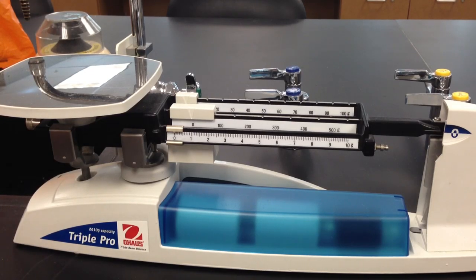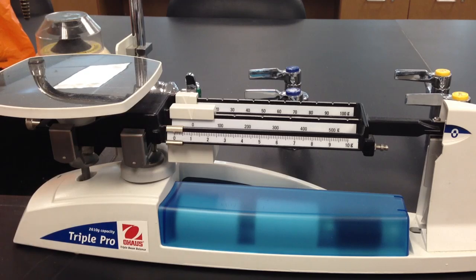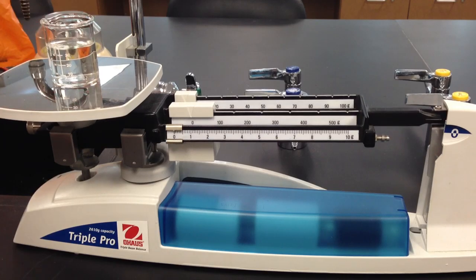How to read a triple beam balance scale. The first thing you want to do is make sure your scale is zeroed properly. We look down here and our scale is right on the zero mark, so we're ready to use it. We're going to measure the mass of a beaker with some liquid in it.